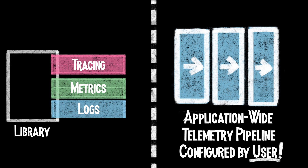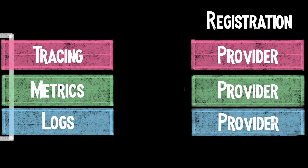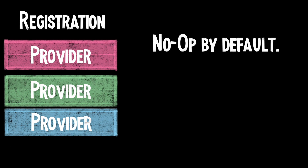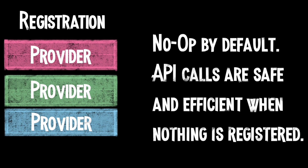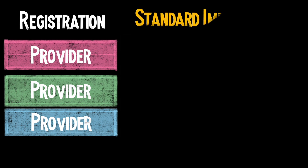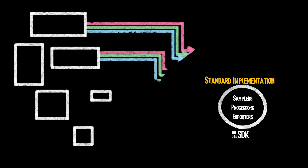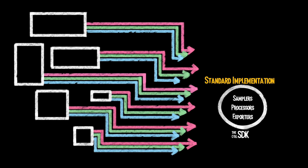OpenTelemetry solves this issue by separating the instrumentation API from the rest of the client. At startup, the application registers their implementation of choice with the API. These registration points are called providers. There's a trace provider, a metrics provider, a logs provider, and so on. By default, a no-op provider is installed. This means if you instrument your library with OpenTelemetry but the end user doesn't install anything, the API won't create any problems for your library. All of the API calls would just be no-ops. The OpenTelemetry project maintains a standard implementation for each provider called the OpenTelemetry SDK. When the user installs the SDK, it gets registered as a provider, and all libraries containing instrumentation automatically start emitting telemetry. Assuming every library has used OpenTelemetry to write instrumentation, the user doesn't have to go around configuring libraries to enable observability or installing any additional plugins.